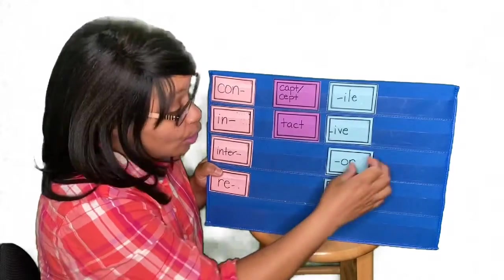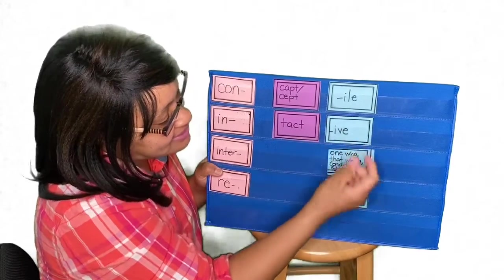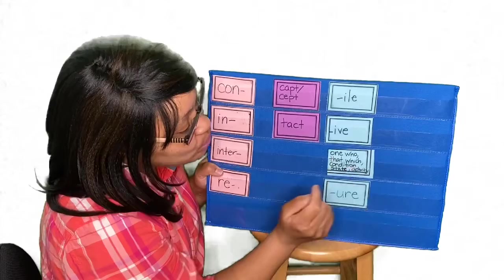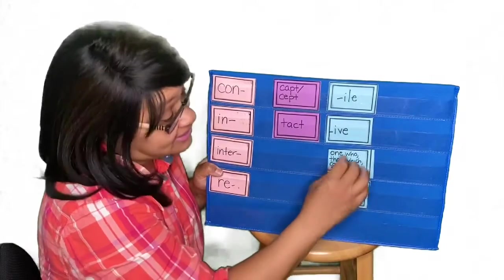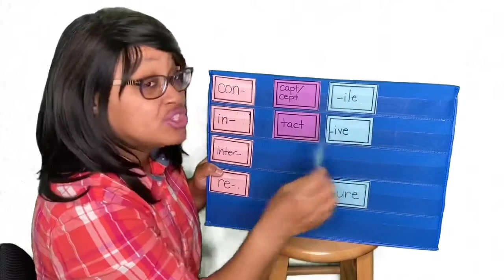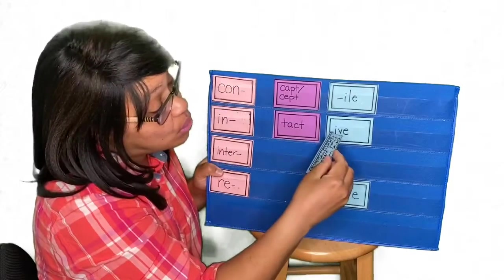Then we have -or, which means one who, that which, condition, state, or activity. So, one who, that which has a condition, state, or activity.